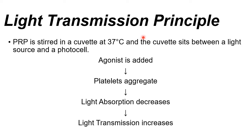Let's discuss the light transmission principle, which is similar to the spectrophotometry principle. We prepare PRP and warm the specimen at 37 degrees Celsius to simulate body temperature and activate the proteins for aggregation. Then we add the agonist. As platelet aggregation increases, less light passes through — light absorption decreases. Based on the spectrophotometry principle, absorption and transmission are inversely proportional. As more platelets aggregate, less light is absorbed, and more light is transmitted.